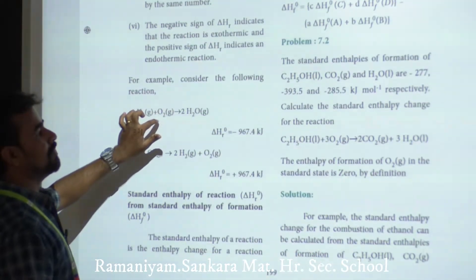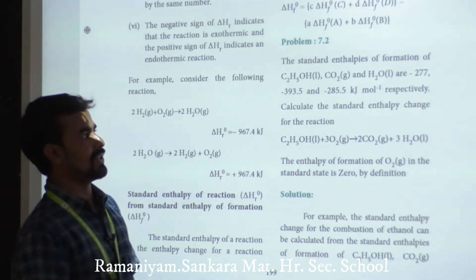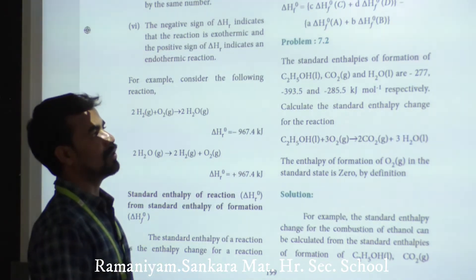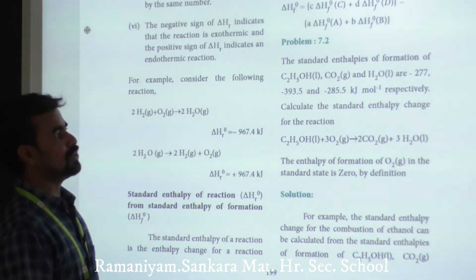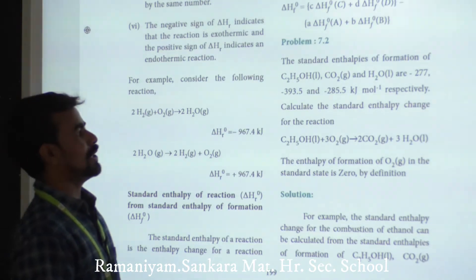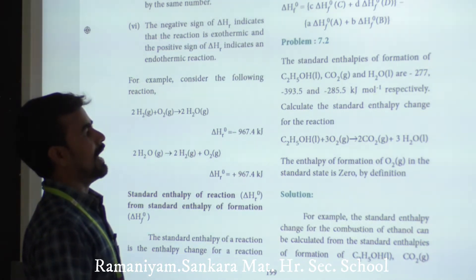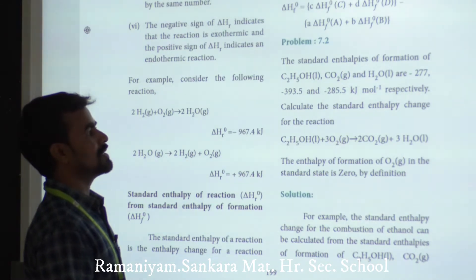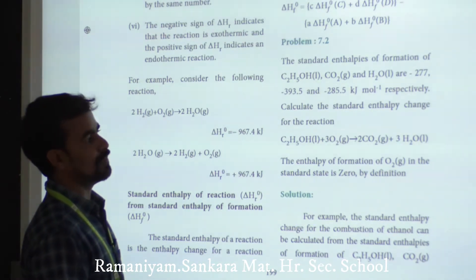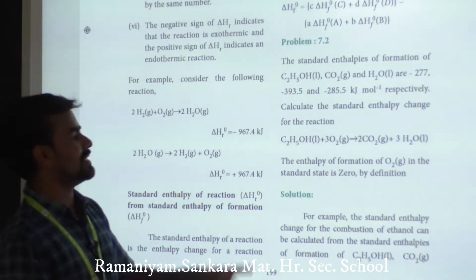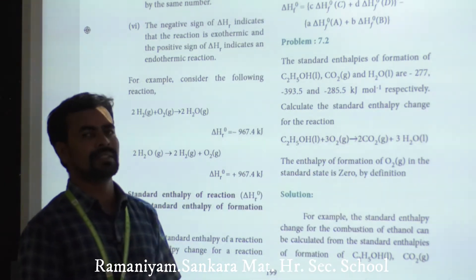Problem 7.2: The standard enthalpies of formation of C₂H₅OH (ethanol, liquid), CO₂ (gaseous), and H₂O (liquid) are minus 277, minus 393.5, and minus 285.5 kilojoule per mole respectively. Calculate the standard enthalpy change for the reaction: C₂H₅OH + 3O₂ → 2CO₂ + 3H₂O.